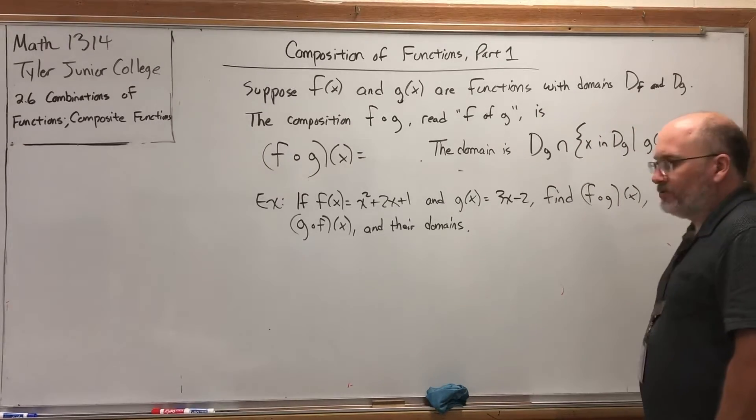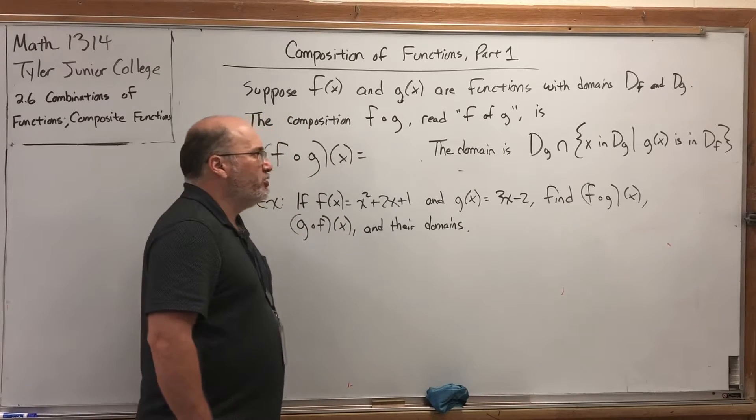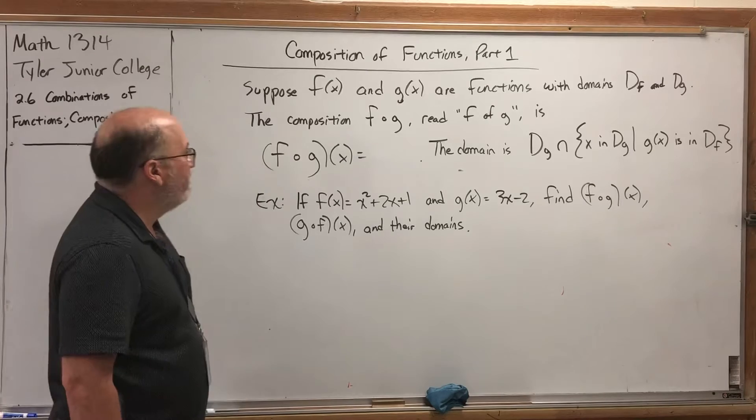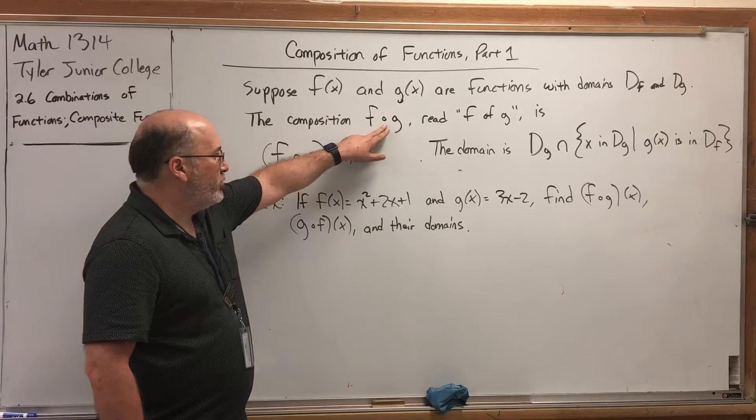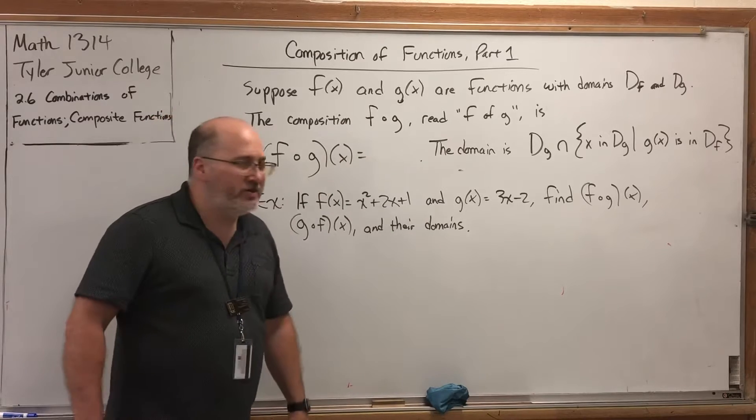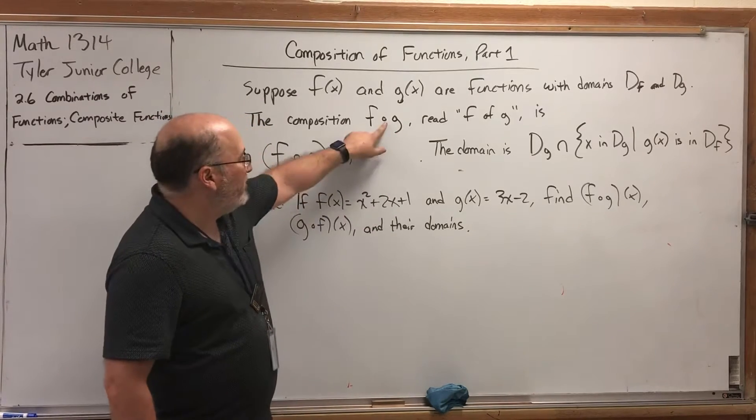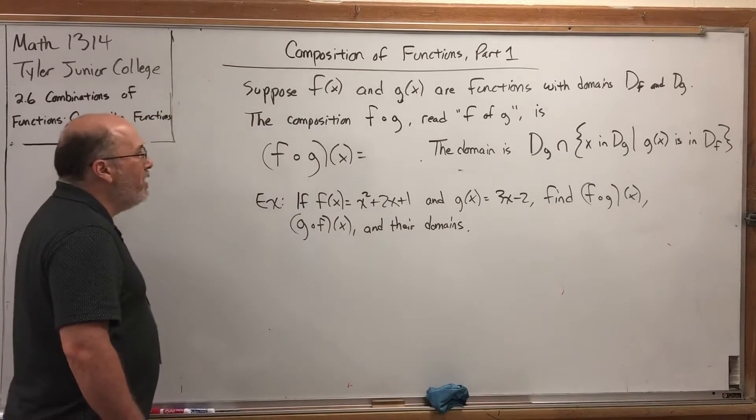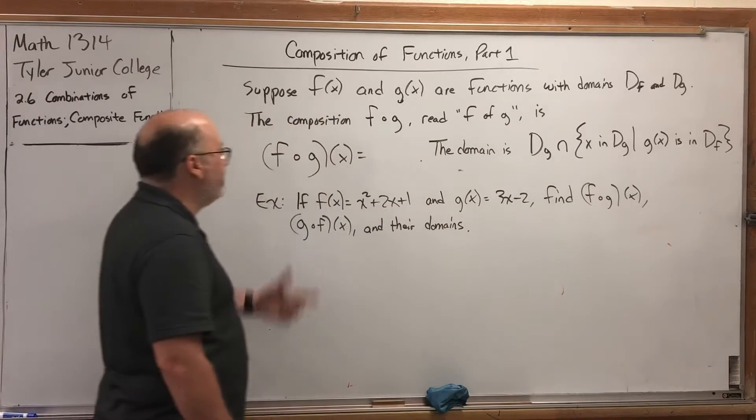Now it's time to introduce a fifth way to combine two functions. Suppose f(x) and g(x) are functions with domains Df and Dg, respectively. The composition, f circle g, but that's not how you read it. You read this f of g, almost as if the circle was an abbreviation for the word of.